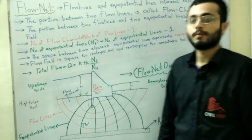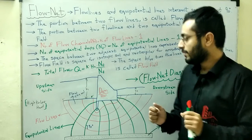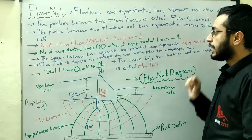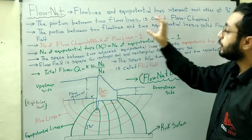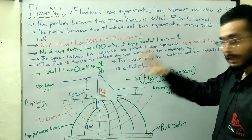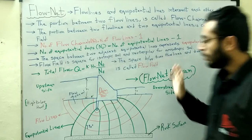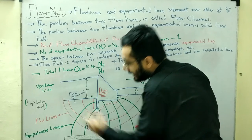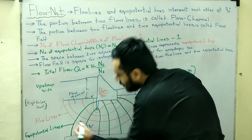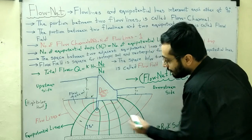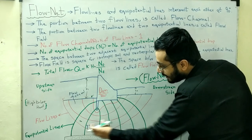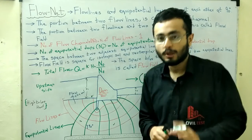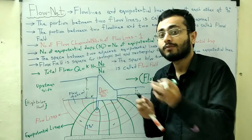Now let us discuss flow field. The space between two flow lines AND two equipotential lines is called a flow field. The difference from flow channel: a flow channel is just between two flow lines, but a flow field is bounded by two red flow lines and two green equipotential lines — forming a small enclosed area within the flow net diagram.